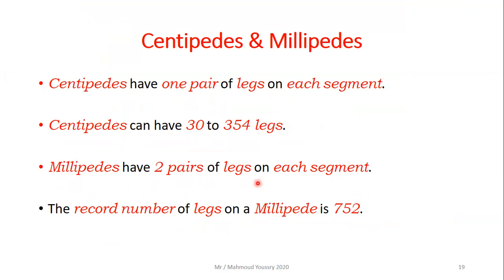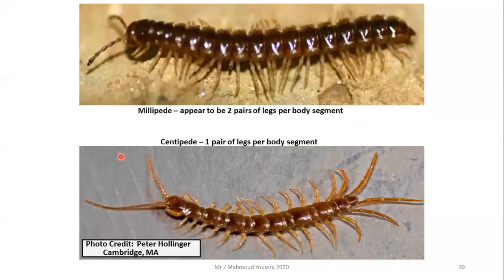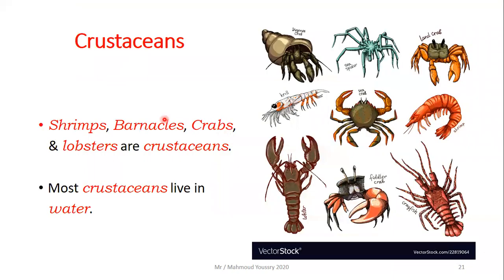Centipedes have one pair of legs on each segment and can have 30 to 354 legs. Millipedes have two pairs of legs on each segment — the record number of legs on a millipede is 752.